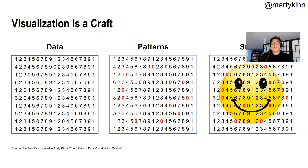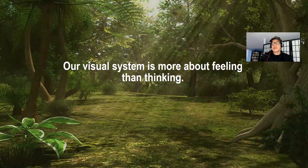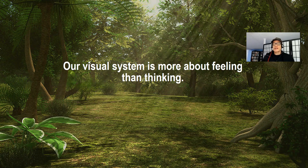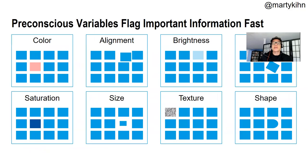Visualization is a craft. You start with the data, look for patterns in the data, and then come up with a story. Our visual system in general is really closer to feeling than thinking. It's not as close to the neocortex as it is to the limbic system — it's more primitive. When we think about how we process information visually, it really quite often aligns directly with feelings, kind of like the sense of smell.